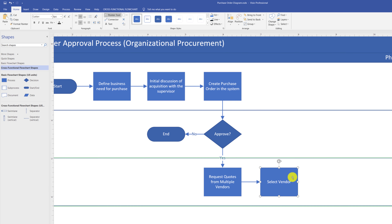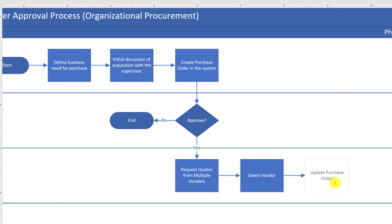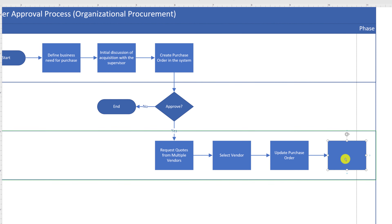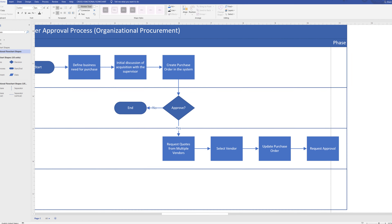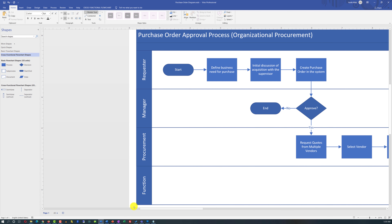Once a vendor is selected, procurement is responsible for updating the original order with their decision and which vendors were contacted. Next, they request approval from the CFO (Chief Financial Officer). An interesting thing just happened — Visio automatically expanded the swim lanes to fit the newly added shape, and it will continue to do so. We also need to rename the CFO swim lane with the correct name.